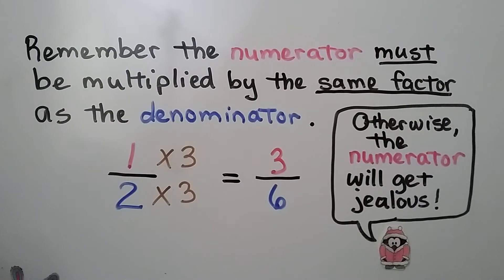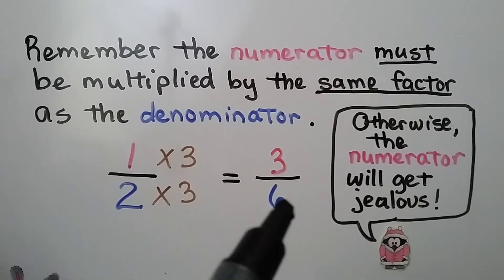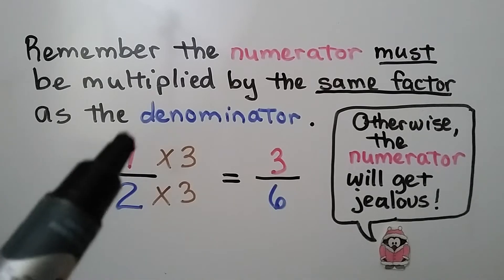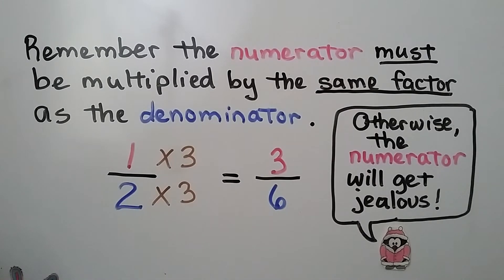Remember, the numerator must be multiplied by the same factor as the denominator. If we are going to use 6 as the denominator and 2 times 3 equals 6, the numerator 1 needs to also be multiplied by 3. We get 3 sixths. The numerator needs to be multiplied by the same factor as the denominator.